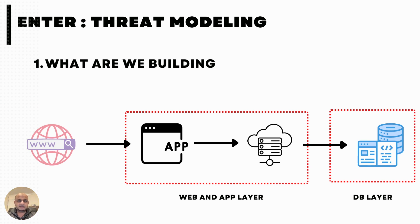So from the web application to the web application server, it'll be using some different type of identity. And then the application server talking to the database is crossing a boundary. So you should draw these trust boundaries and you can put labels like 'web and app layer,' 'database layer.' The browser itself is in the public — it's not trusted. So now you've understood that.